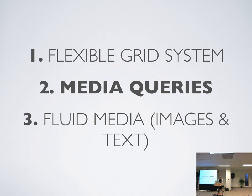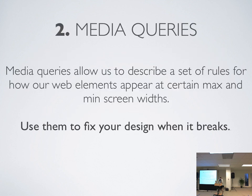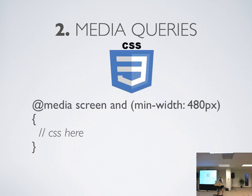The second part of responsive web design is media queries. This one's more known to people. Basically, media queries are a set of rules that describe how web elements appear at certain max and min screen lengths, amongst other things. In responsive web design, we use media queries to fix our design when it breaks — when the flexible grid system kind of isn't working for us.